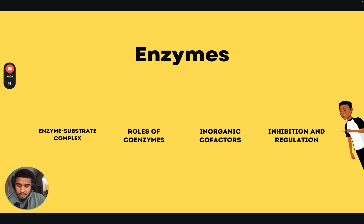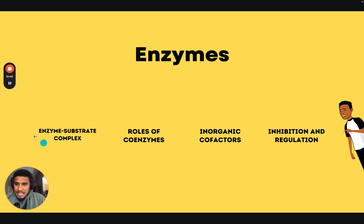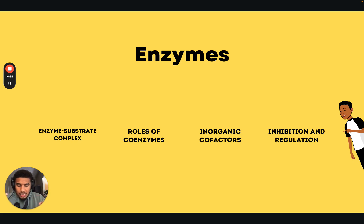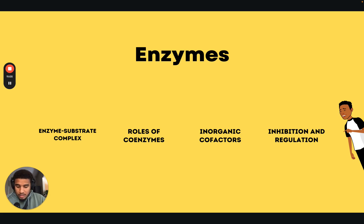You also need to understand reusability, pH and temperature sensitivity, and cofactors and coenzymes. When we talk about the enzyme-substrate complex, we're talking about a fundamental concept of enzymology — the temporary association between an enzyme and its substrate during a chemical reaction. You need to know how the substrate works, the active site, the formation of the complex, the catalyst, product formation, and enzyme recycling.